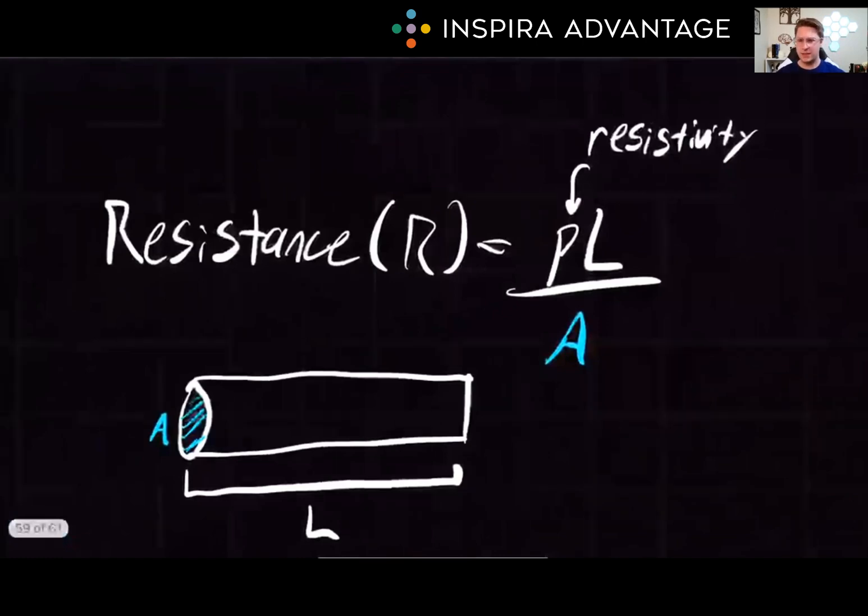What is resistance? It is the opposition a substance offers to the flow of electric current. Think of it as electrical friction. Resistors, which are conductive materials with a moderate amount of resistance, slow down electrons without completely stopping them.